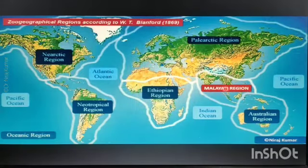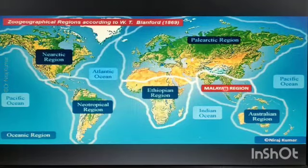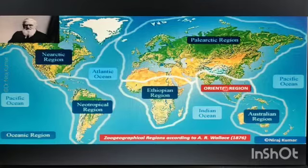W.T. Blanford proposed the name 'Malayan' for the Indian Region. In 1859, Huxley proposed the division of the earth into two primary divisions. In 1871, E. Blyth divided the earth into seven regions and 26 sub-regions. Sclater suggested the union of Nearctic and Palaearctic into a common Holarctic region. Finally, A.R. Wallace in 1876 adopted the divisions made by Sclater; the name 'Oriental' was given for the Indian Region. Each region has four sub-regions, and the final basis was whole vertebrates.